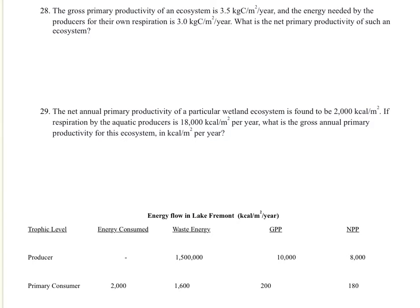Number 28, the gross primary productivity of an ecosystem is 3.5 kilogram calories per meter squared per year. And the energy needed for their own respiration. Remember, a producer is something that photosynthesizes. So producers do mostly photosynthesis, but they also do cellular respiration. They do both. However, consumers, animals like us and bacteria and fungi, we only do cellular respiration. And we just call it respiration. What's the net primary productivity of such an ecosystem? So this one just fits in. It says the GPP is here, so 3.5. And it says the respiration is 3. And so we can just subtract and get 0.5.